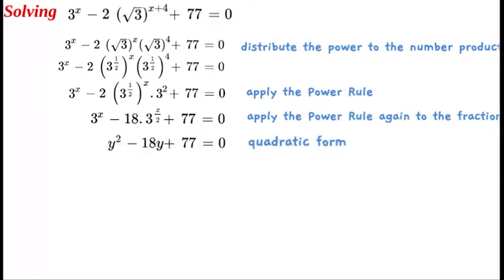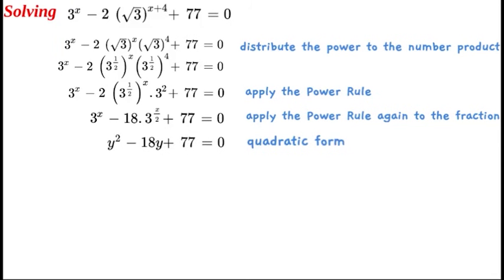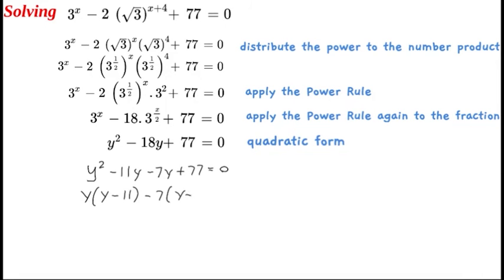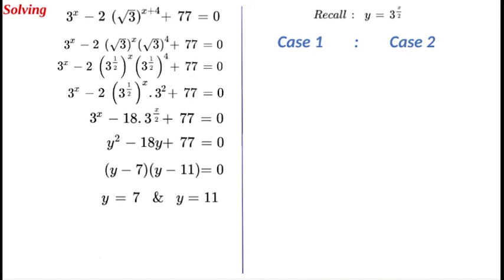Substituting in, we have the quadratic form: y squared minus 18y plus 77 equals 0. We can split the middle term as minus 11y and minus 7y, plus 77. Taking out the common factor, y times (y minus 11), minus 7 times (y minus 11), we obtain the two factors: (y minus 7) and (y minus 11) equals zero. This gives us y equals 7 and y equals 11. Recalling that y equals 3 to the power of x over 2.